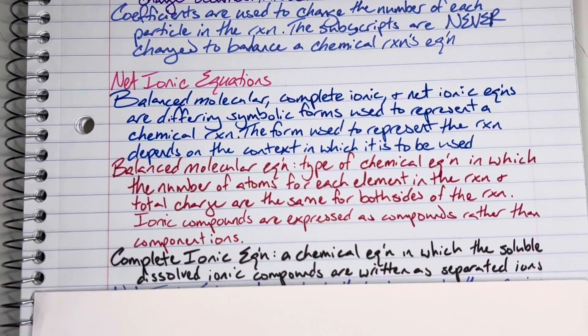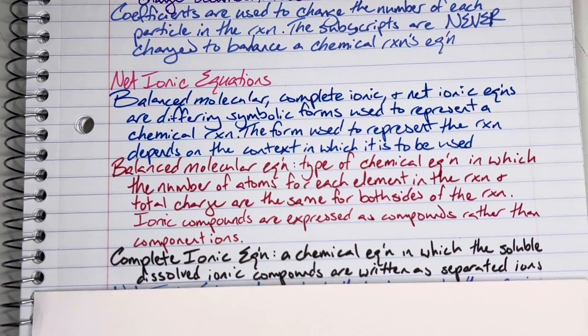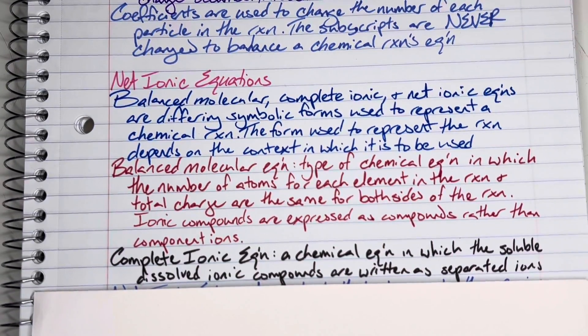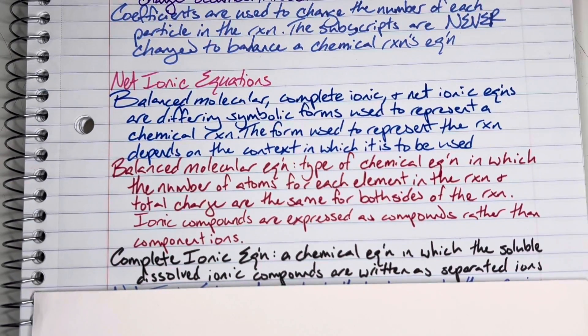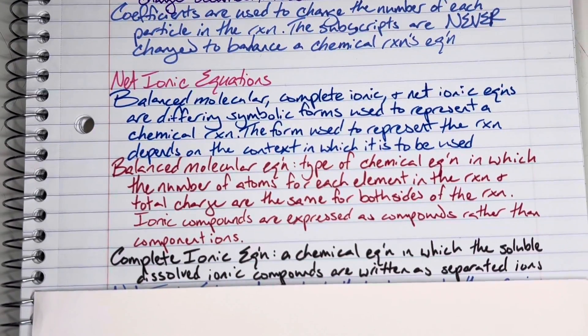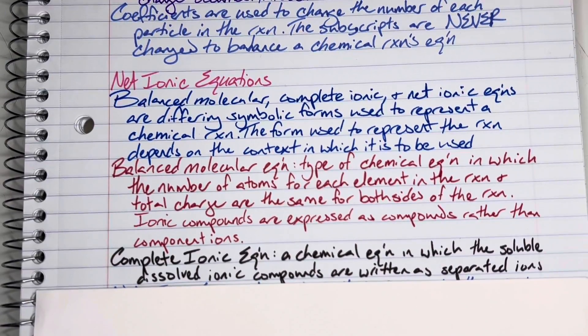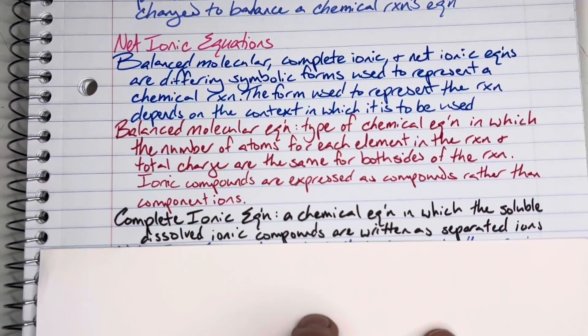Complete ionic equations are a chemical equation in which all soluble and dissolved ionic compounds are written out as separated ions. Instead of writing the full ionic equation, we would break it down into its constituent ions.